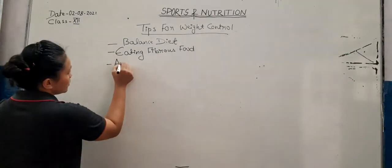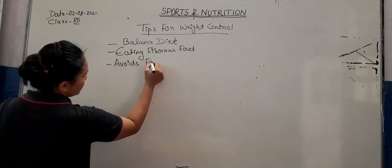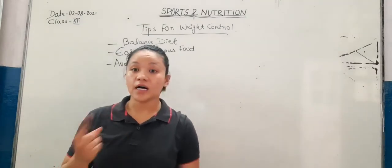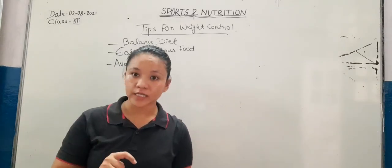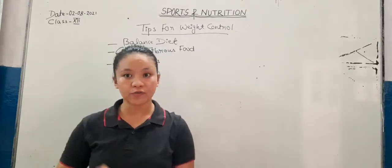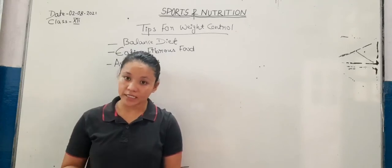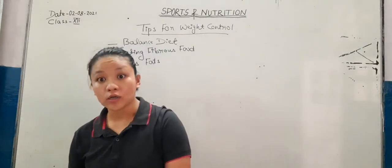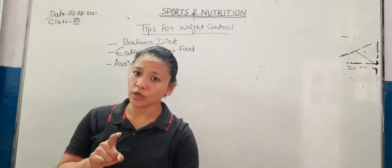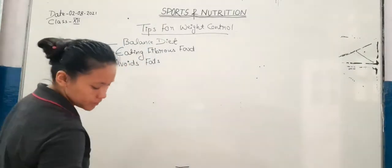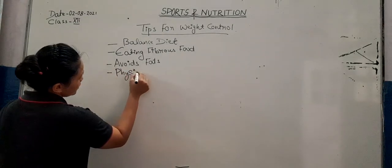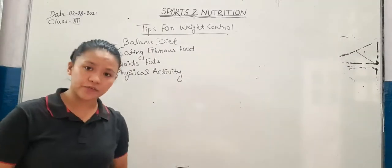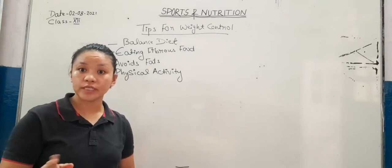Avoid fat. If you want to reduce your weight, avoid fat. If you do eat fat, take unsaturated fat. There are two types of fat: saturated fat, which we get from animal products like ghee and butter; and unsaturated fat, which we get from plant products like coconut oil, refined oil, soya oil, etc. So take unsaturated fat. Also do physical activity regularly — it helps reduce weight and keeps you fit, healthy, and energetic.